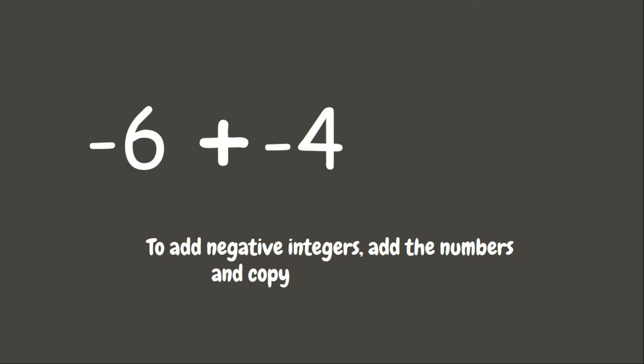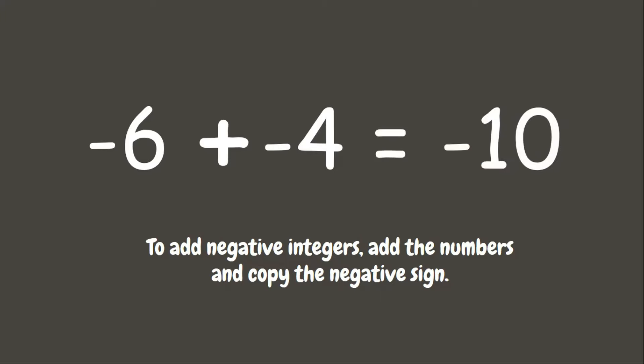Now let us solve without using number lines and counters. We have negative 6 plus negative 4. Remember, when adding negative integers, we simply add the numbers and copy the negative sign. Therefore, 6 plus 4 is 10, and copying the negative sign, we get negative 10.